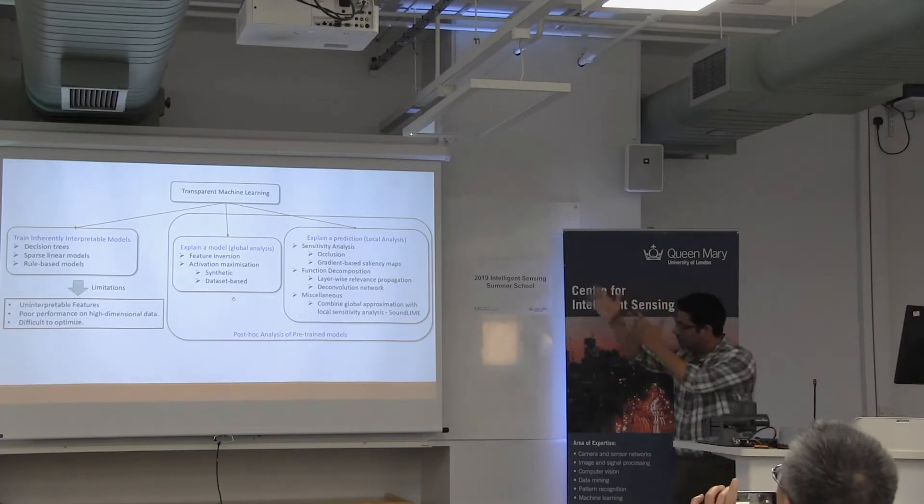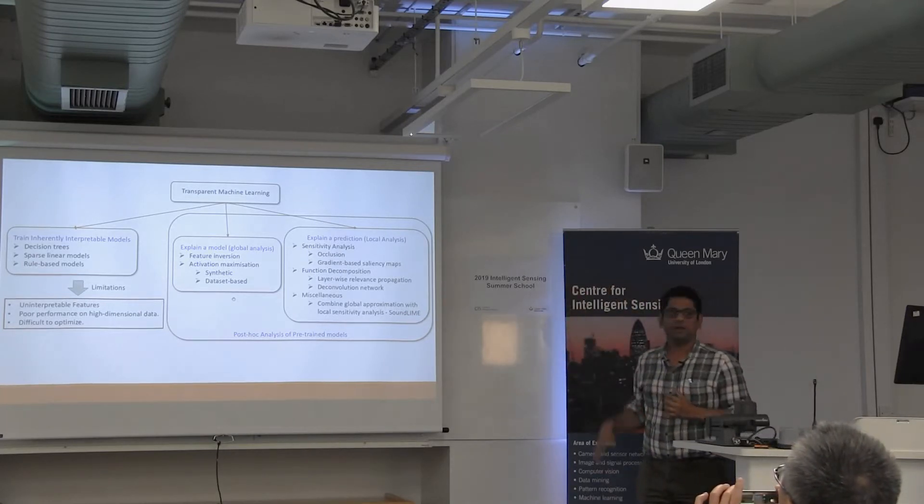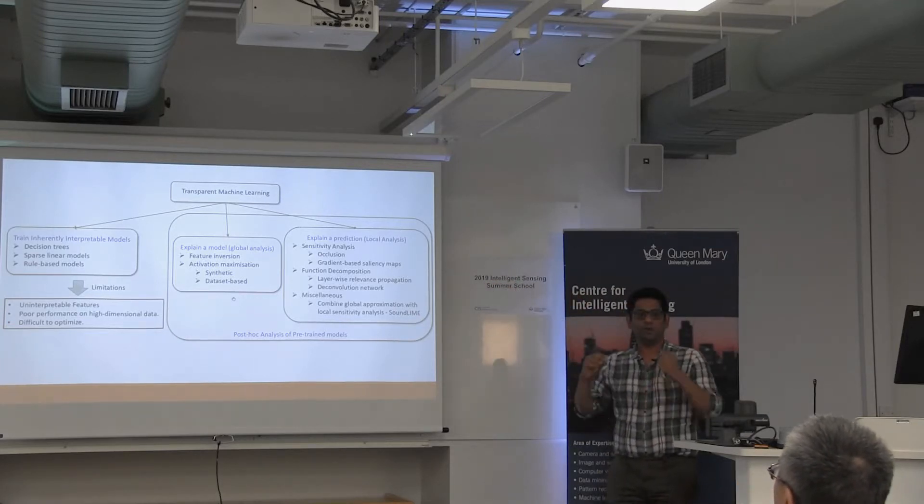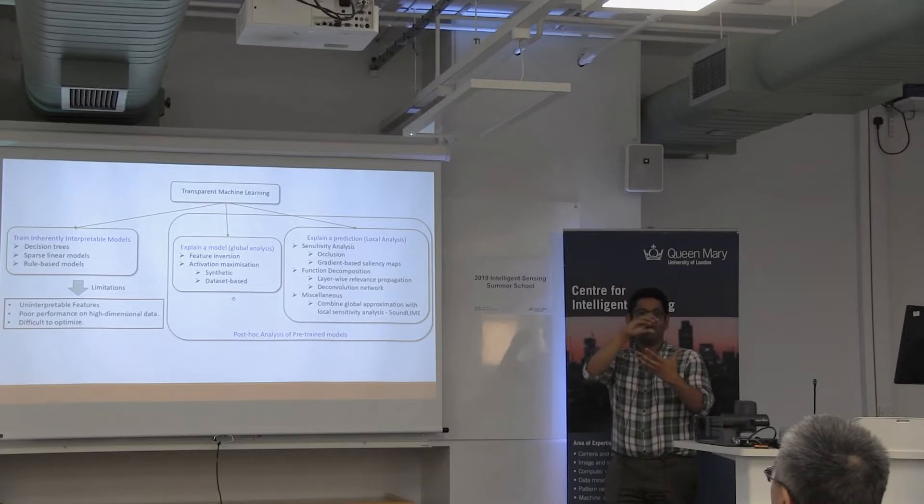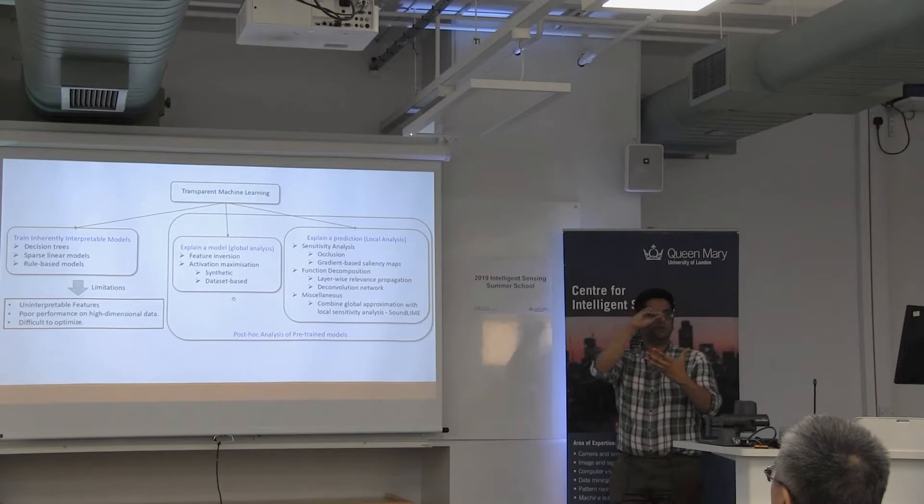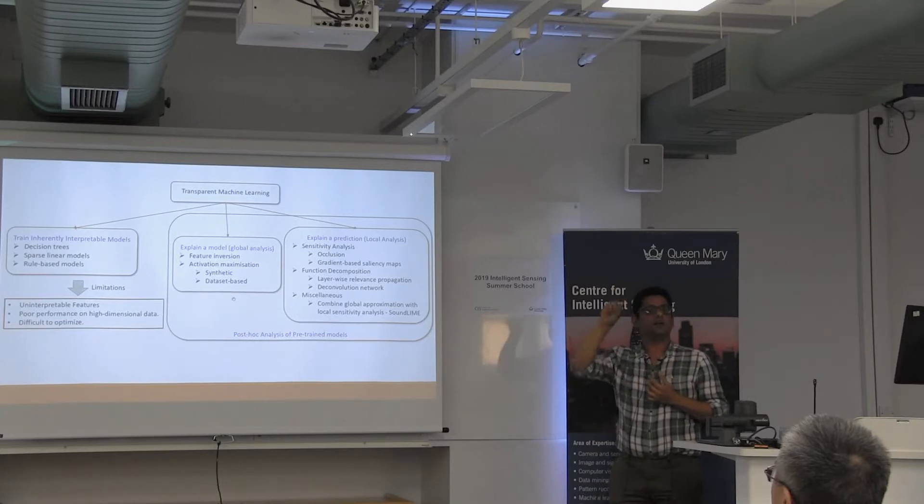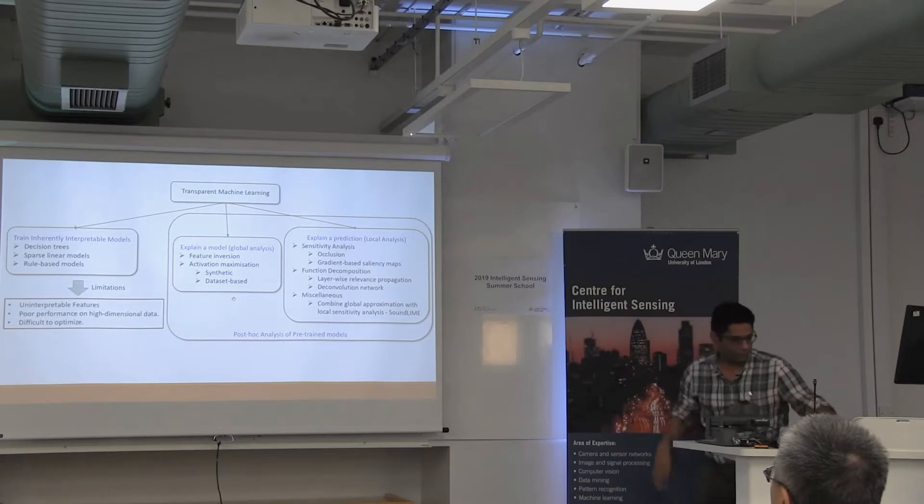In another direction, some ways to explain a prediction: sensitivity analysis, which I talked about. There is another thing called occlusion, where people take a patch, say a rectangular patch, start moving the patch on an image, and for each location of the patch, record the prediction of the classifier. The idea is: if there's a position where the classifier is looking, the prediction will dip the most when you occlude that particular part. I won't go in detail, but these are some of the famous methods to do that.